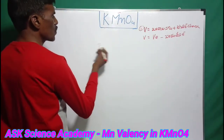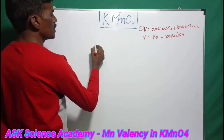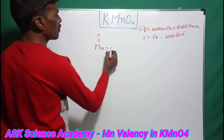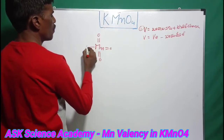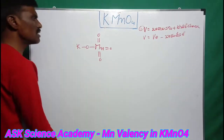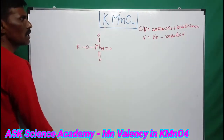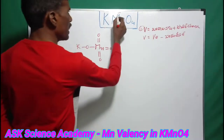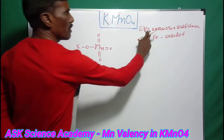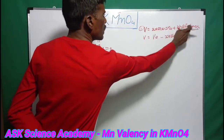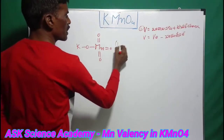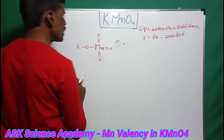The main structure here is potassium permanganate with manganese at the center. This is the structure used to get the balance. The formal charge formula is: Fc equals valence electrons minus non-bonded electrons minus bonded electrons divided by 2.